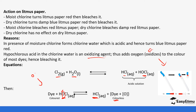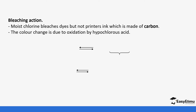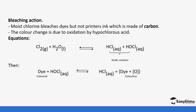This bleaching is by oxidation, unlike the bleaching by sulfur dioxide which is by reduction — so chlorine's bleaching is more permanent. Once a substance is bleached by chlorine, it does not return to its original color, unlike with sulfur dioxide where the substance can revert upon oxidation by exposure. Moist chlorine bleaches dyes but not printer ink, which is made of carbon. The color change is due to oxidation by hypochlorous acid, which gives up its oxygen atom to the dye to form a colorless matter.